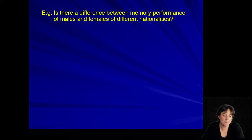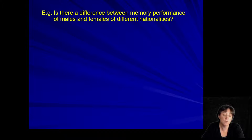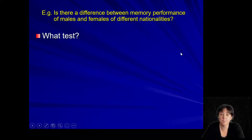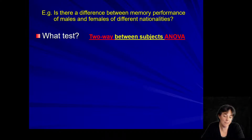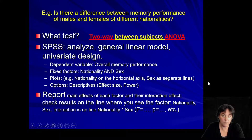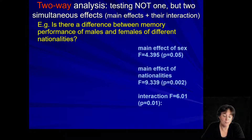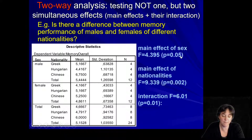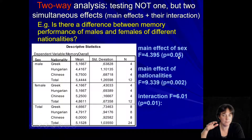Let's see some examples. Is there a difference between memory performance of males and females across different nationalities? This is a typical two-way ANOVA where both factors — sex and nationality — are between-subjects effects. This is how we would do it in SPSS and what we would report. We tested the main effect of sex, and there we see something we would call a tendency or a marginally significant effect because the p-value is just at 0.05 but is not significant.